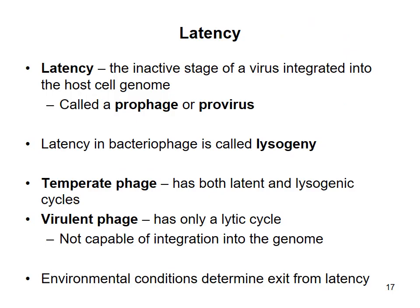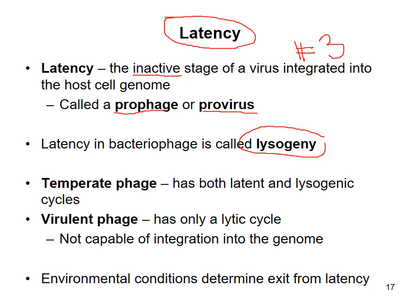Some viruses have a latency — an inactive stage — where the virus is lying dormant in step three, integrated into the genome as a prophage (for bacteriophages) or a provirus (for RNA-based retroviruses). There are some phages that can be temperate, meaning they have the ability to go back and forth between the latent lysogenic and lytic cycles. A virulent phage tends to only have a lytic cycle — as soon as the virus makes contact with the host cell, it will not lie dormant but will immediately go into its replication and distribution cycle.